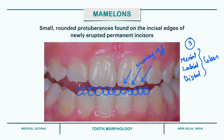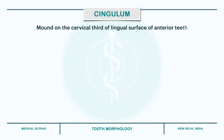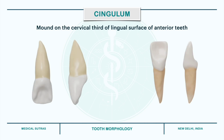Next we have cingulum. Cingulum is seen as a mound on the cervical third of the lingual surface of anterior teeth. It develops from the lingual lobe and makes up the bulk of the cervical third of the lingual surface. For example, in upper and lower central incisors, this bulk in the cervical third is known as the cingulum.